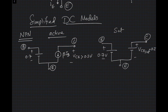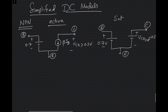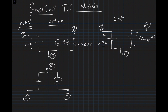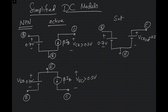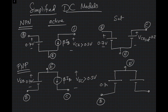Similarly for the PNP transistor: in the active region VEB = 0.7 V, collector current is β·IB, and VEC must be greater than 0.3 V. In saturation, both diodes are forward biased with VEB = 0.7 V and VEC_sat ≈ 0.2 V. You should draw these models in your notebook to get comfortable with them.